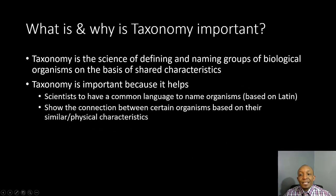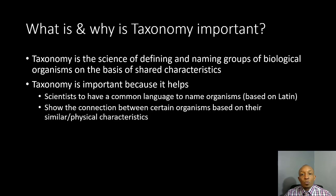So what is taxonomy and why is it important? Taxonomy is the science of defining and naming groups of biological organisms on the basis of shared characteristics. Taxonomy is important for two reasons. First, scientists have a common language to name organisms, and they base this language off of Latin. Latin is a dead language and is no longer changing or evolving, so it doesn't matter what part of the world a scientist is in or what language they speak — they can all use Latin to name and identify organisms. Second, it shows the connection between certain organisms based on their similar physical characteristics.